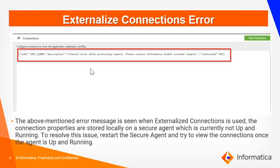It is very critical that if you choose to store the connection properties at the agent level, the agent in which the connection properties are stored is always up and running. One might see the above mentioned error when an externalized connection is used and the connection properties are stored on the local secure agent which is currently not up and running. This error appears in the connections page. To resolve this issue, one must restart the secure agent and ensure that the agent services are up and running. Once the services are up and running, you can try to view the connections.